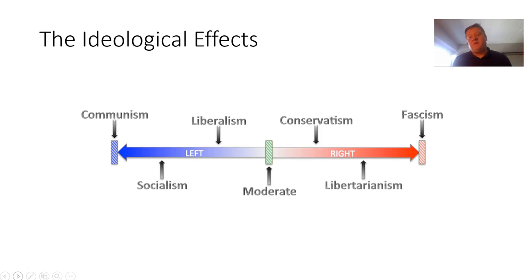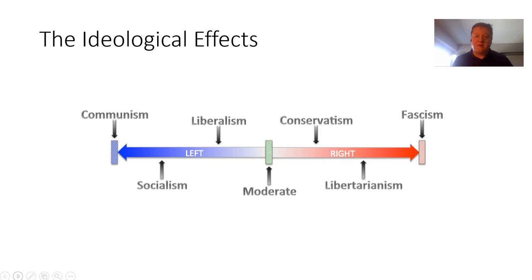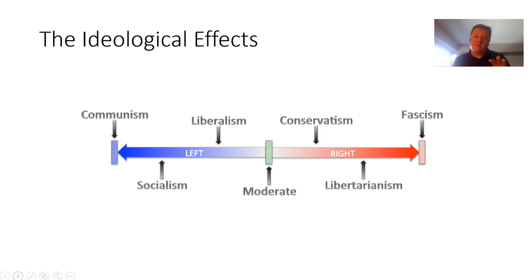There are a lot of people that argue about maybe some of these things should be shifted around. People on the right end of the spectrum don't like being associated with fascism, so they always say fascism should be on the left end. People on the far left don't like being associated with communism, so they argue communism should be over on the far right end. We're not going to get involved in those arguments. This is the accepted academic model for political scientists and others that study this stuff, so we're going to go with this.